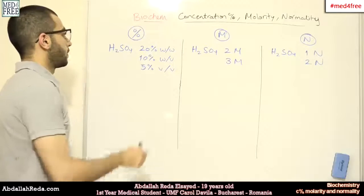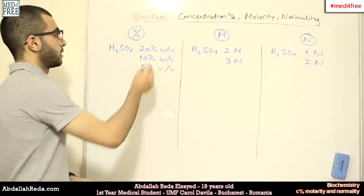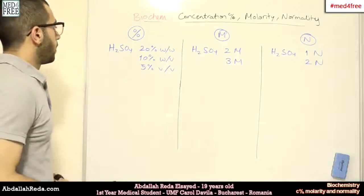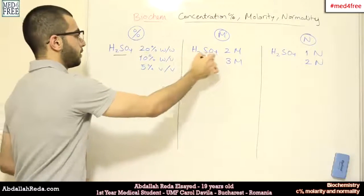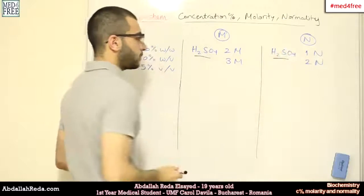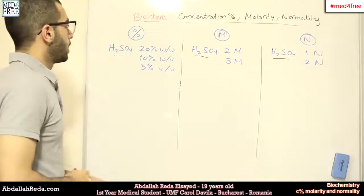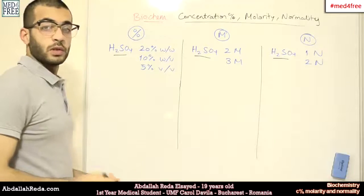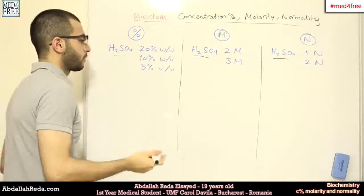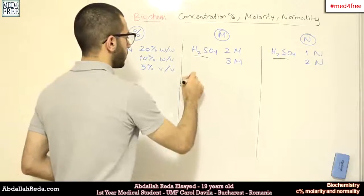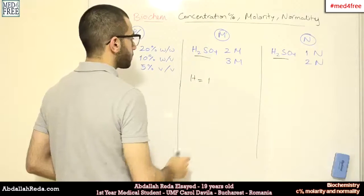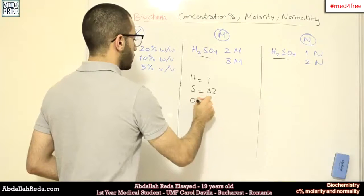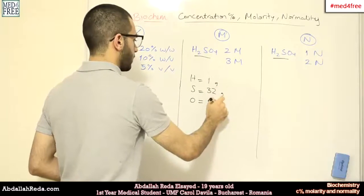The first thing that I'm going to talk about is the concentration percentage, and we are going to deal with sulfuric acid. So, the first thing that we need to know about sulfuric acid is the molecular mass. And for this we have to know that the atomic mass of hydrogen is 1, for sulfur is 32, and for oxygen it's 16. And of course these are grams.